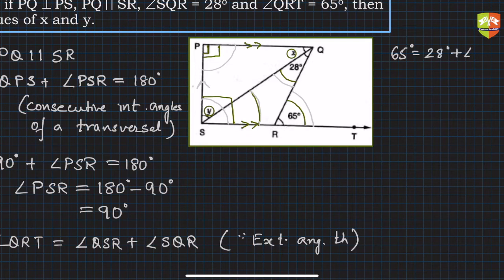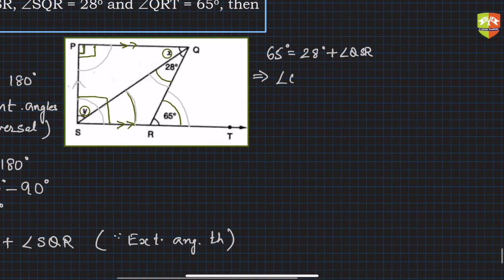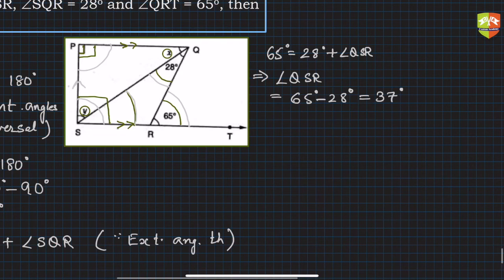From this equation, angle QSR equals 65 degrees minus 28 degrees, which is 37 degrees.